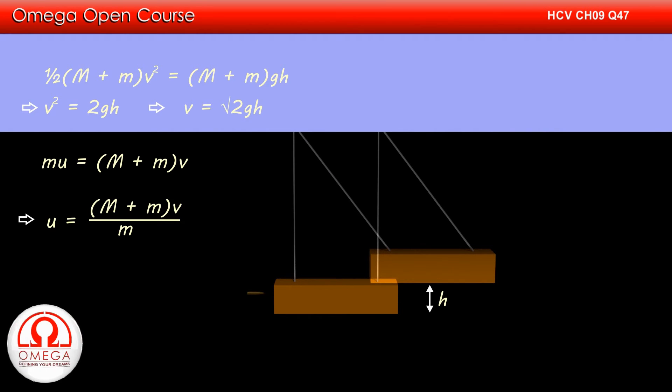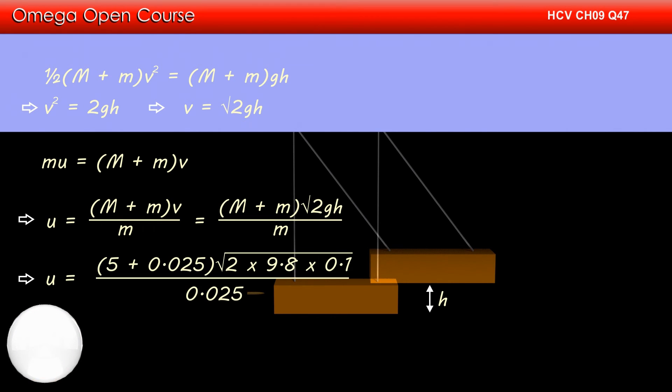This implies u = (M + m)V/m. Putting the value of V, we get u = (M + m)√(2gh)/m. Putting the values,